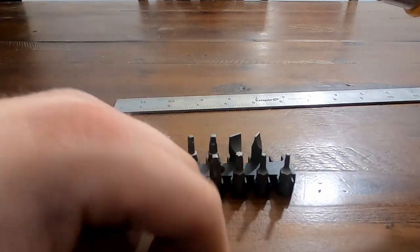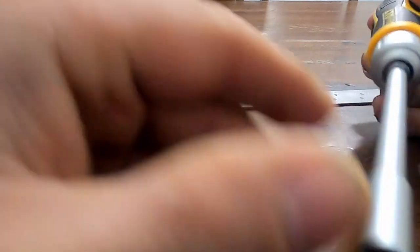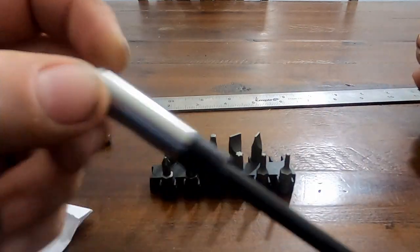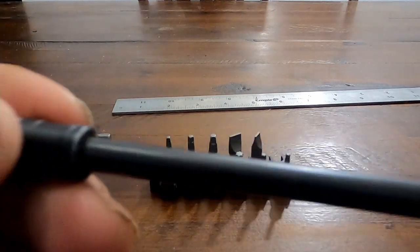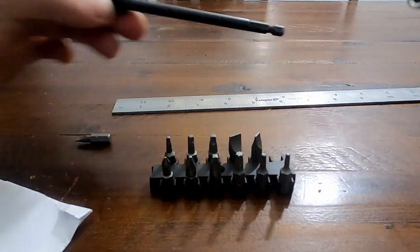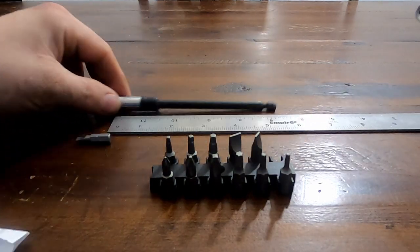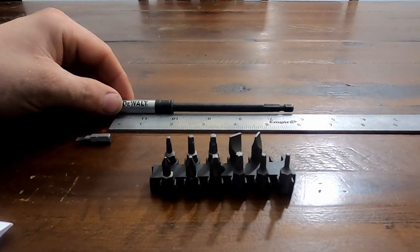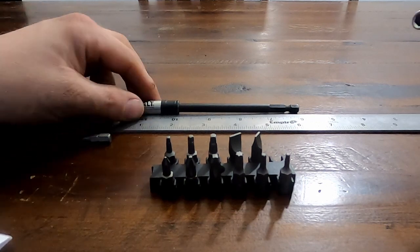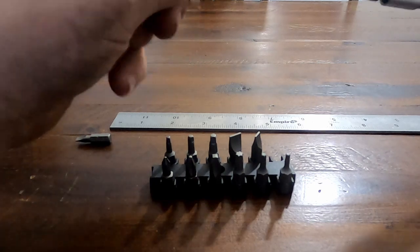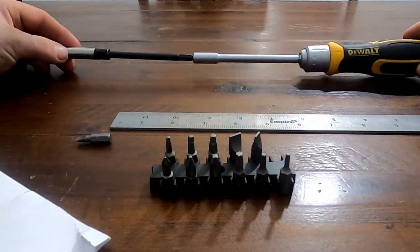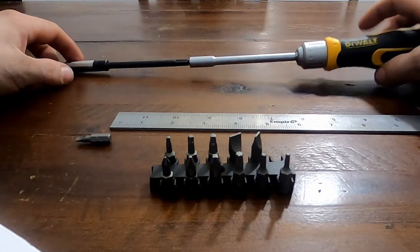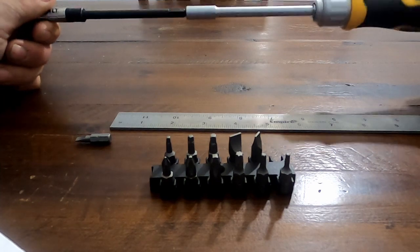But in addition to that, because that is quarter inch hex on the end of there, and because that is magnetic, you can take like this DeWalt quarter inch hex shank bit holder extension. I'm going to measure this. This extension measures about six inches long, but if I put that in the end of there, I have even a longer ratcheting screwdriver.